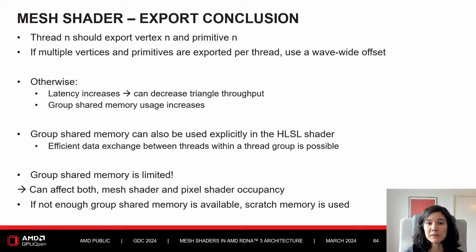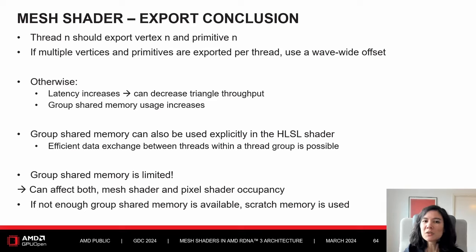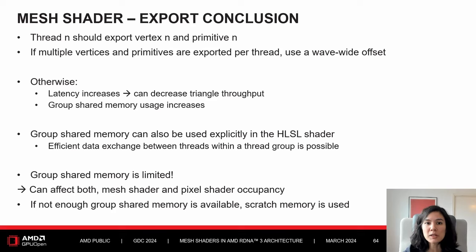Group shared memory can be used explicitly in your mesh shader to exchange data between threads, but it is limited. If you use group shared memory and the compiler also inserts group shared memory usage, the occupancy may be limited more than initially anticipated. Additionally, pixel shaders also use group shared memory, so their occupancy can be affected as well. In very extreme cases, you might even spill to global memory if there is not enough group shared memory available.